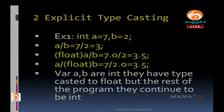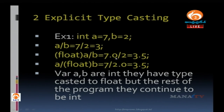Next we go for explicit type casting, which is done by the programmer. For example: int A equals 7, B equals 2. A divided by B gives 3 (integer division). If we type cast A to float — 7.0 divided by 2 — we get 3.5. Similarly, type casting B as float(B) with A divided by float(B) also gives 3.5.